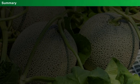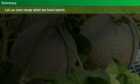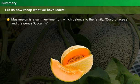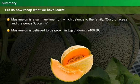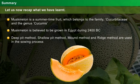Summary. That has been an interesting lesson about production technology of muskmelon. Let us do a recall of what we have studied. Muskmelon is a summertime fruit which belongs to the family Cucurbitaceae and the genus Cucumis. Muskmelon is believed to have been first grown in Egypt during 2400 BC. Deep pit method, shallow pit method, mount method and ridge method are used in the sowing process.